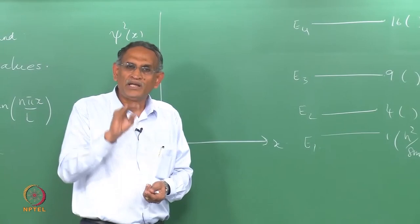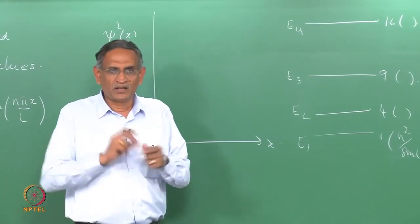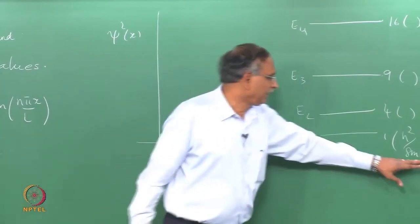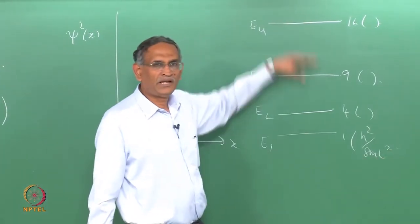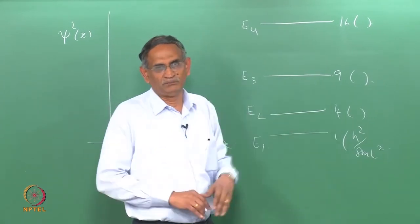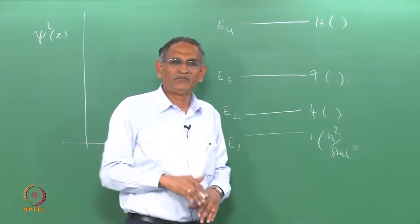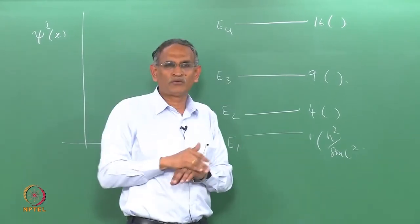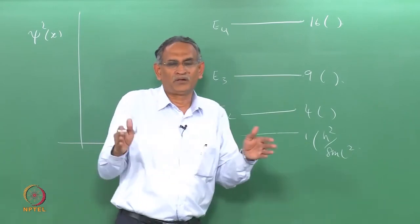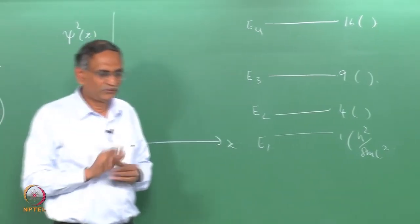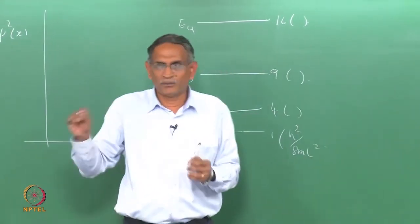When L is very large, when m is very large you see that these quantization energies, the gaps between them are not very important and a very large amount of energy that is very high values of the quantum number are easily reached and the particle behaves more or less like classically. So, this is an important what is called the correspondence limit.